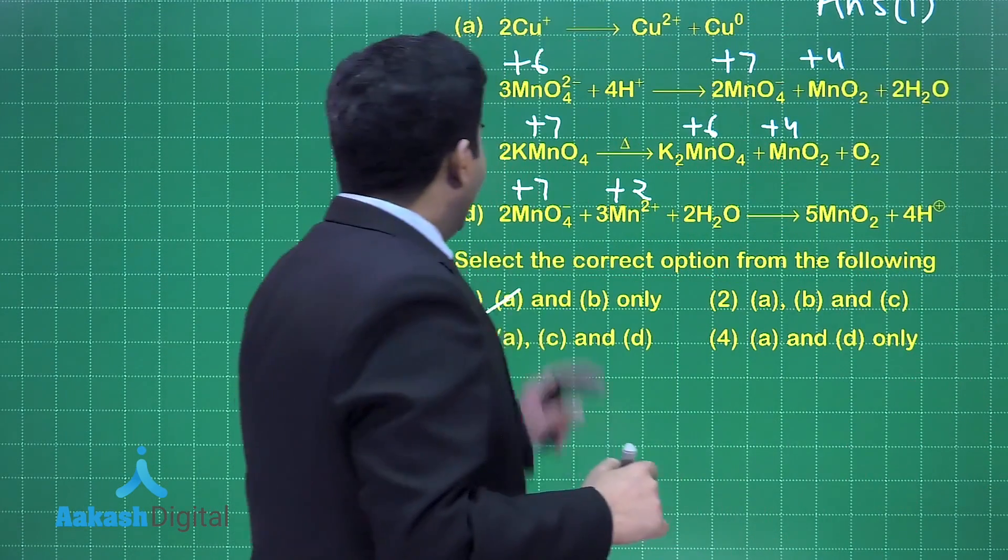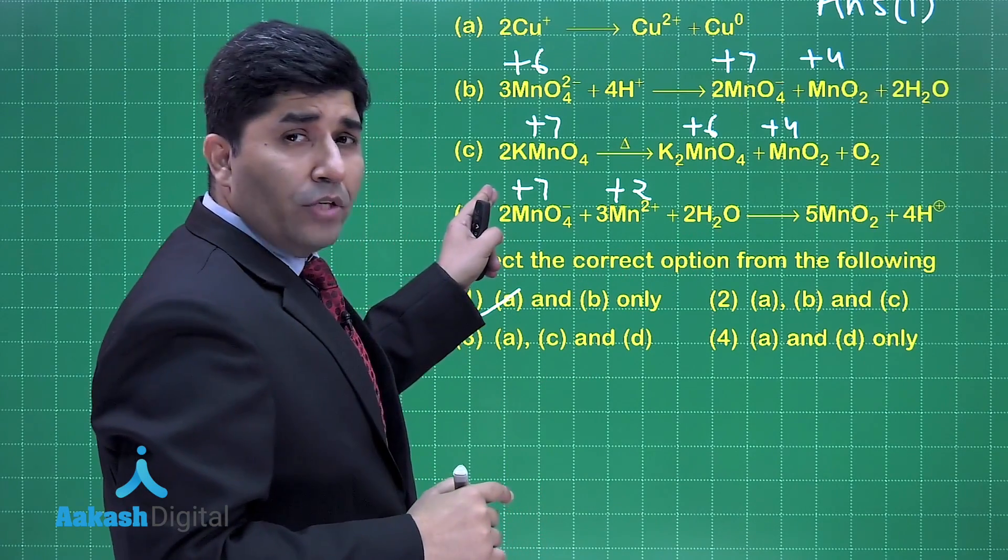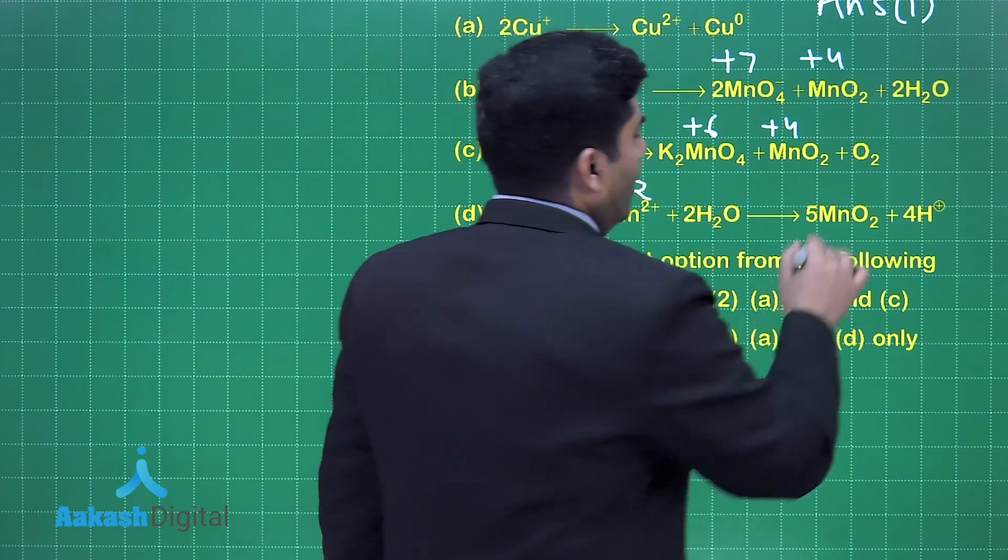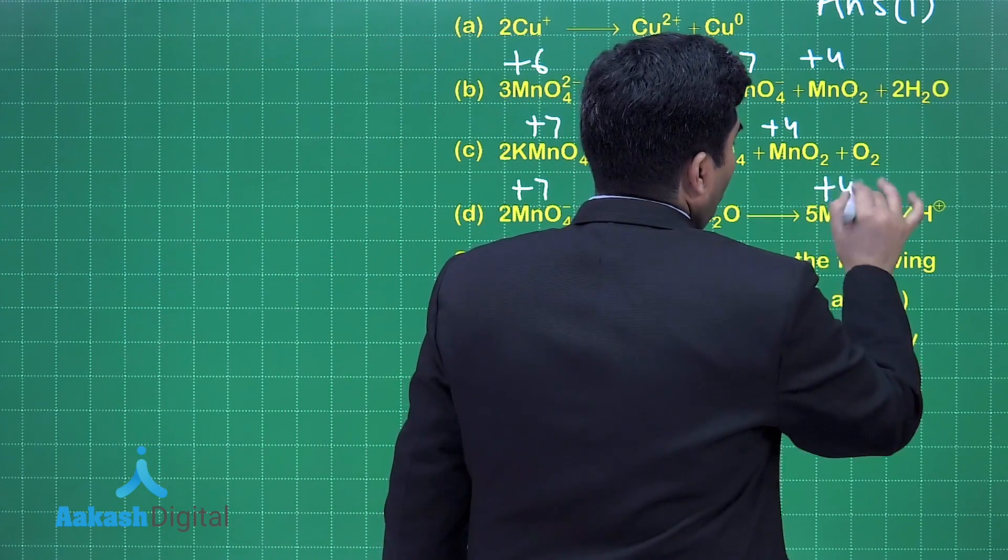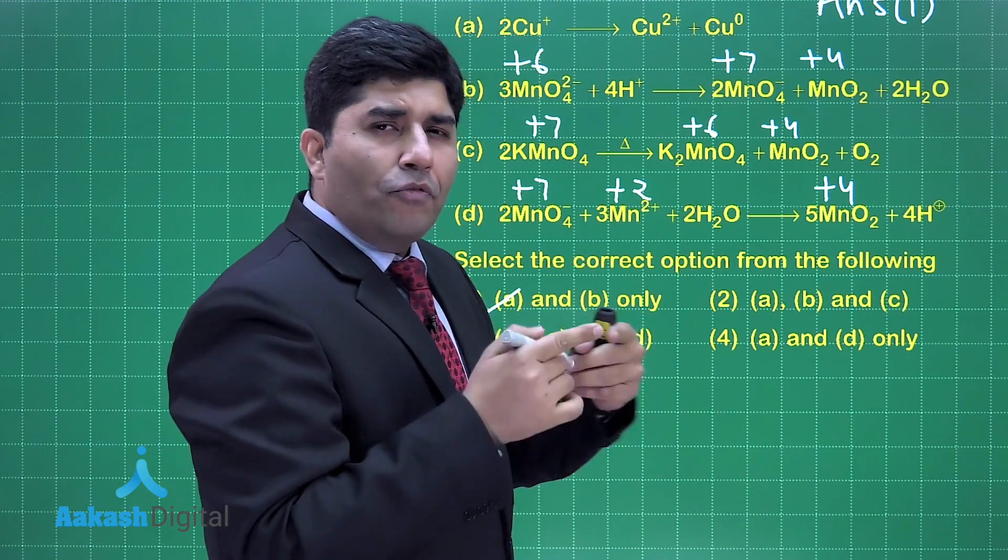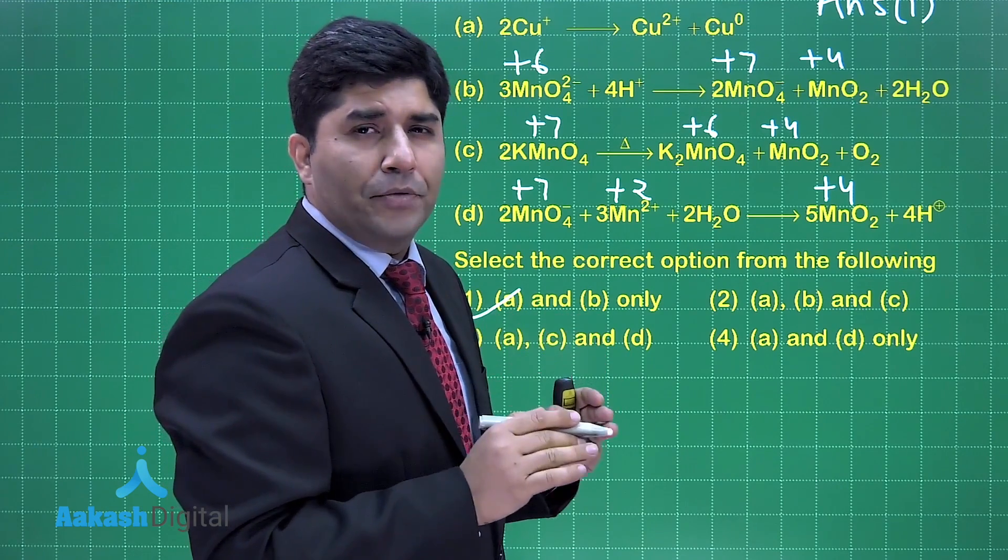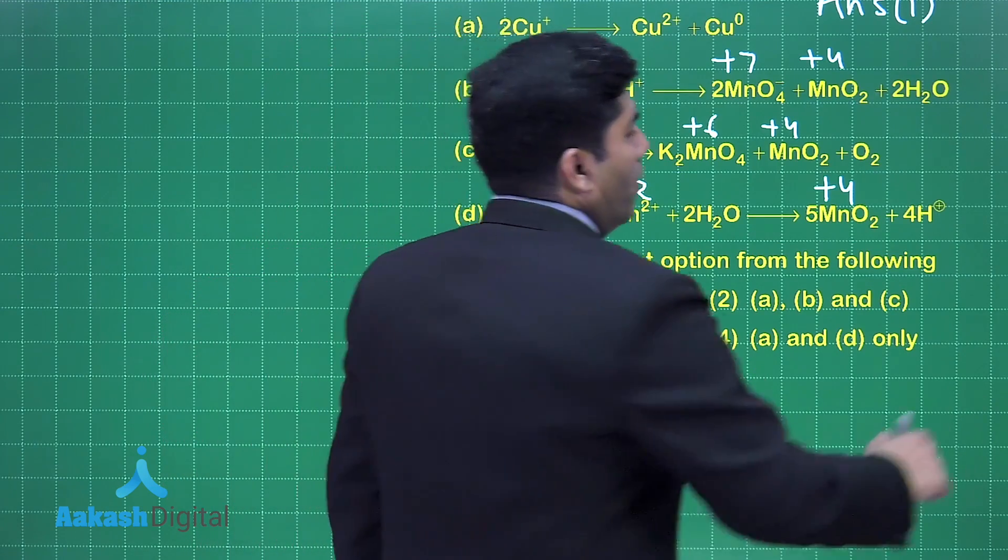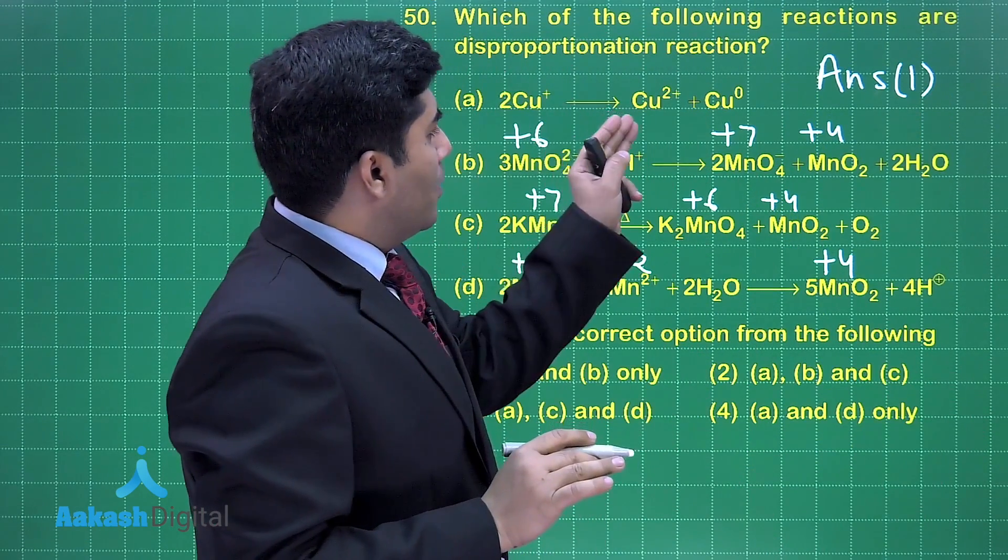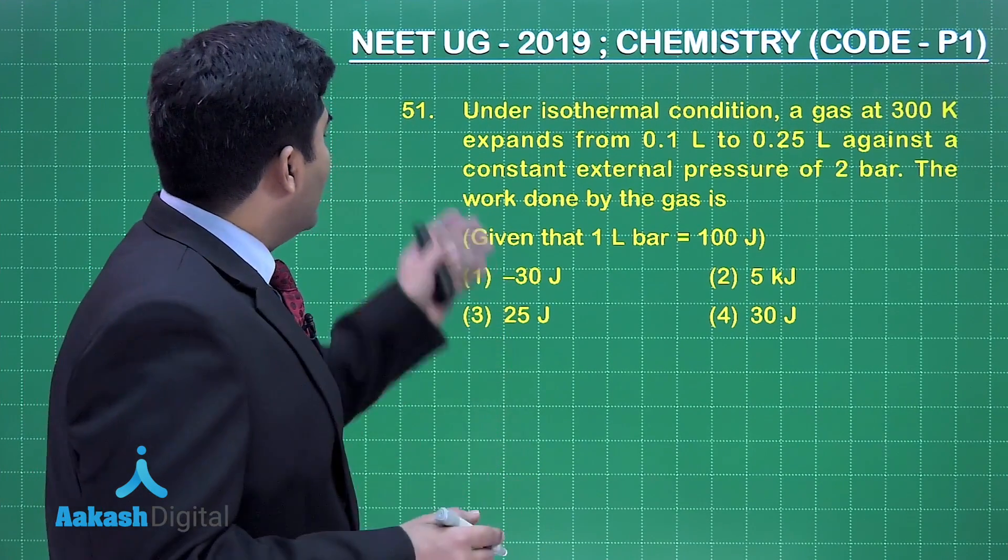So the correct answer is option number one. And one more thing I want to tell you is in this type of reaction which is given in D, +7 is oxidation state of manganese and here +2 is oxidation state, and in the product side it is +4. So this reaction is opposite of disproportionation reaction and this reaction is called comproportionation reaction. So our final answer is answer number one. Let's move on to the next question.